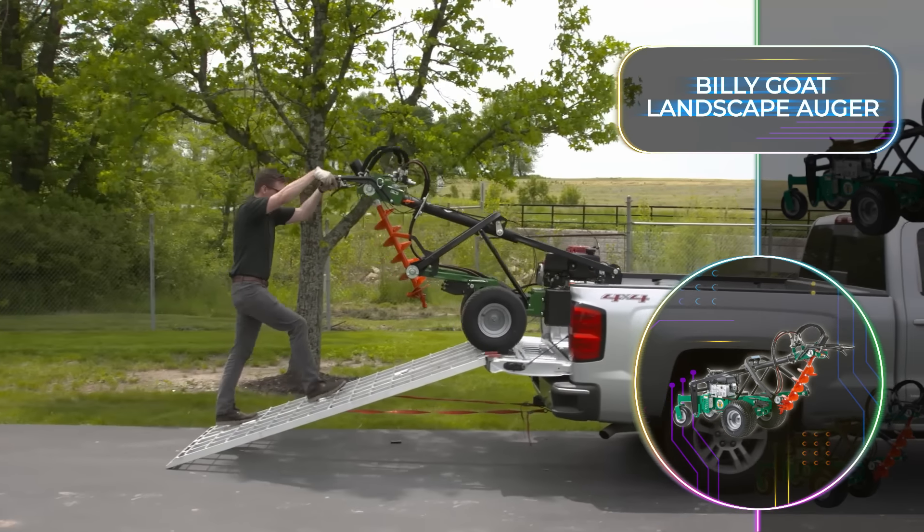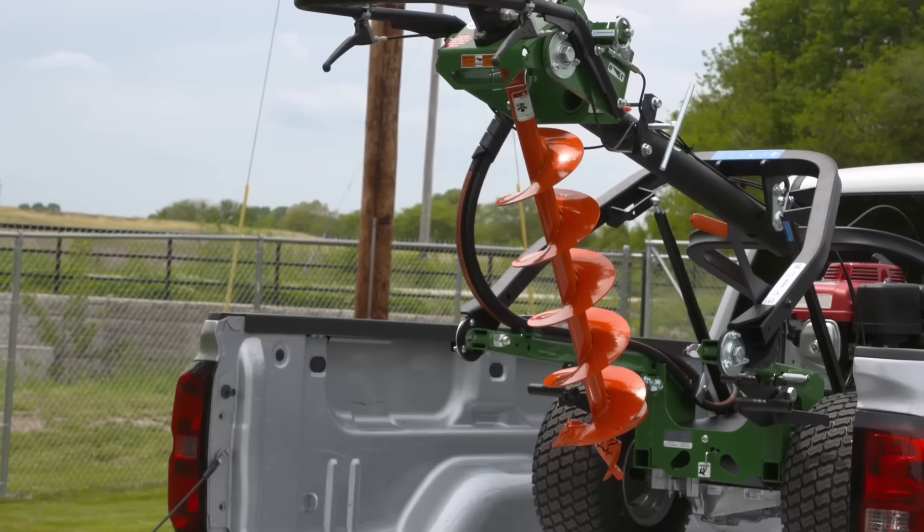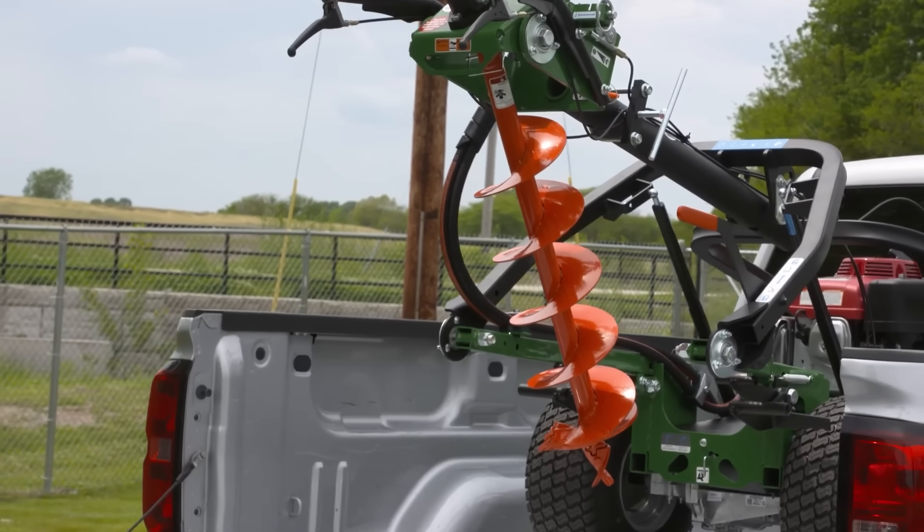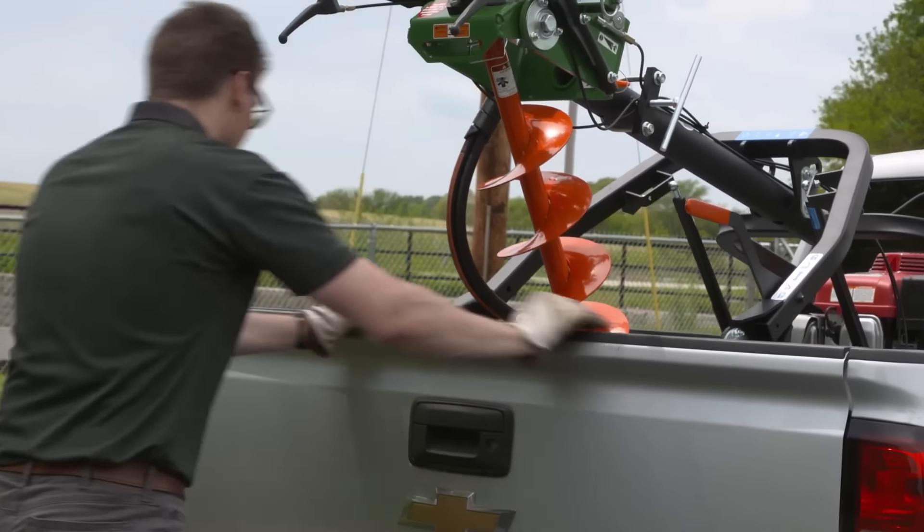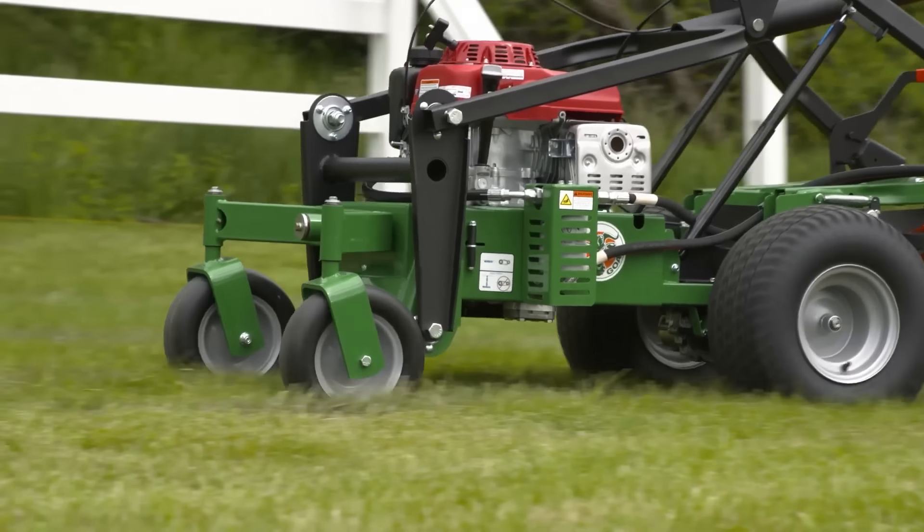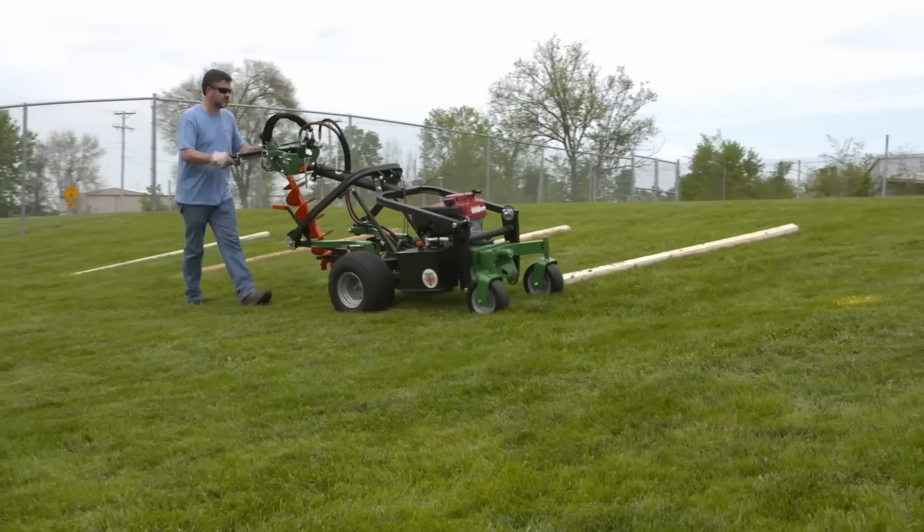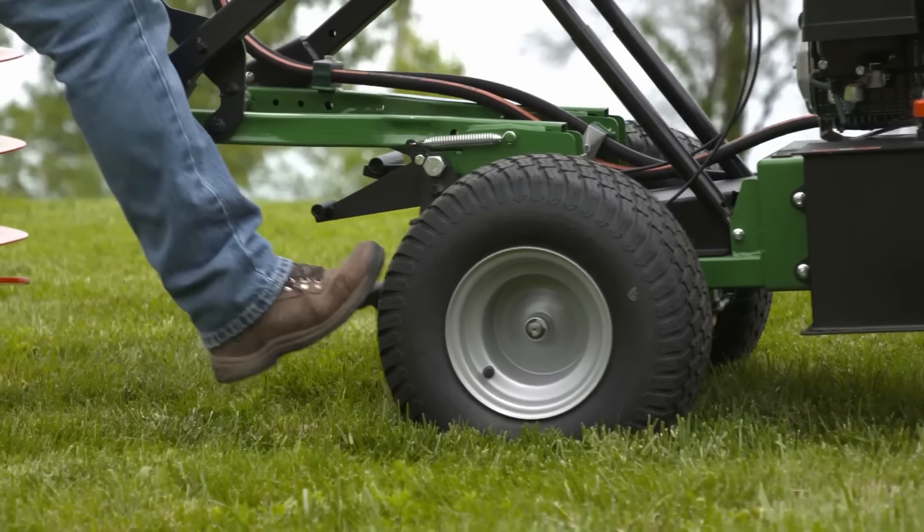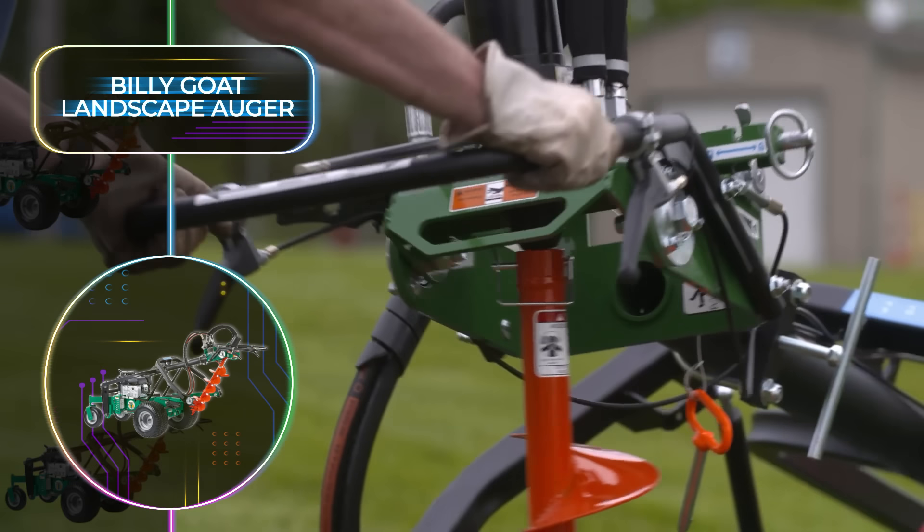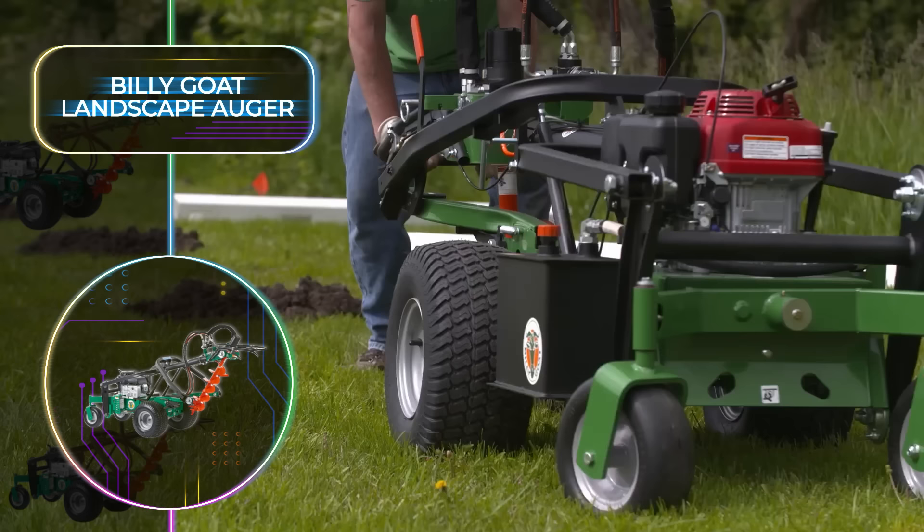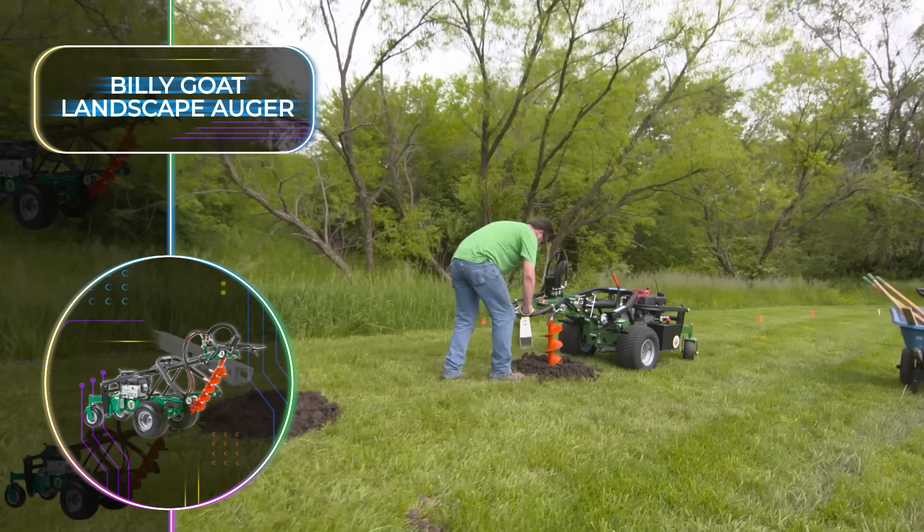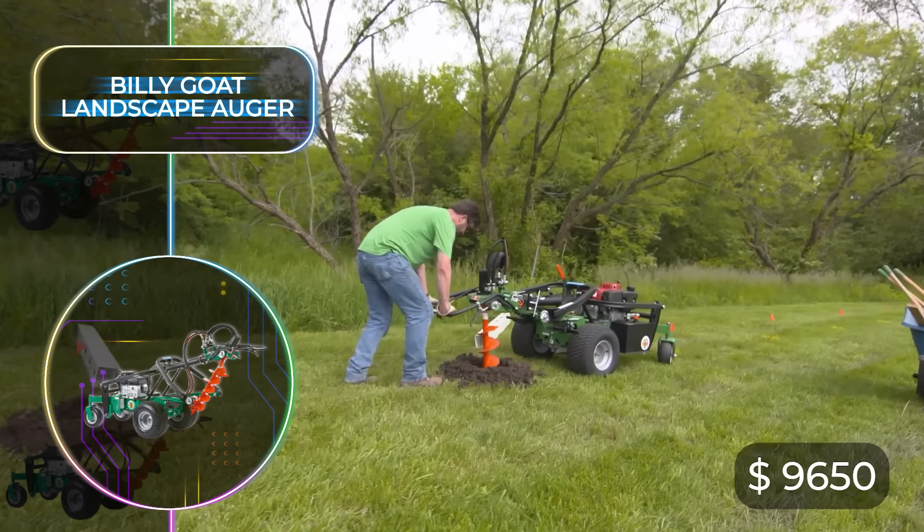Its design has been optimized to fit in the back of a pickup truck, eliminating the need to remove the drill when transporting it. Equipped with a powerful 13-horsepower or 9.7-kilowatt engine, this auger boasts top-notch performance in its class. Its standout features include innovative Z-link technology ensuring minimal machine movement during drilling. Overall, the Billy Goat Landscape Auger offers fatigue-free drilling and incredibly easy hole-to-hole transport and is set to become the go-to choice at only $9,650.